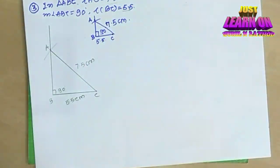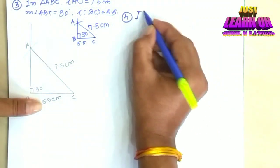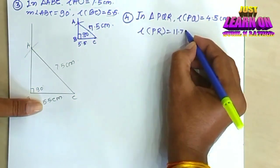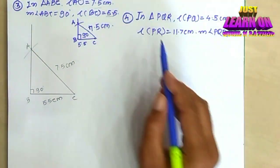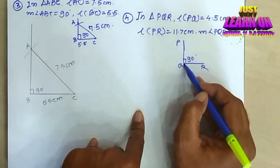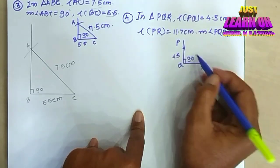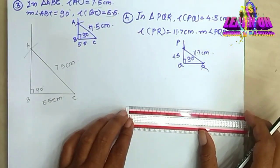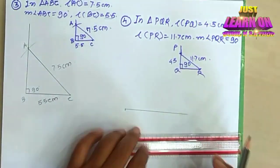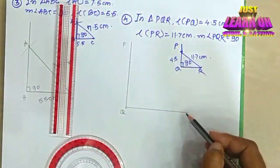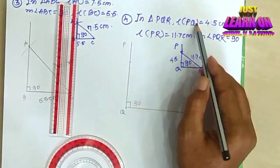Number 3: In triangle ABC, segment AC equals 7.5 cm, the measure of angle ABC equals 90 degrees, and segment BC equals 5.5 cm. Here, angle ABC is the right angle, so our rough sketch looks like this. First of all, put the right angle. Then with the help of segment BC equals 5.5 cm, two steps are complete. This is the third step — here is the right angle and 5.5 cm.